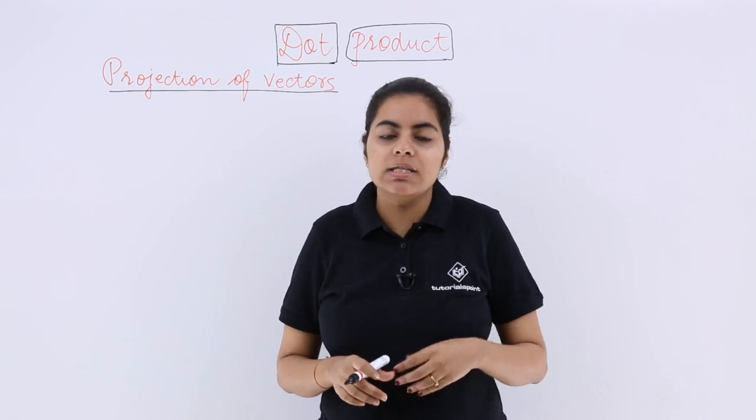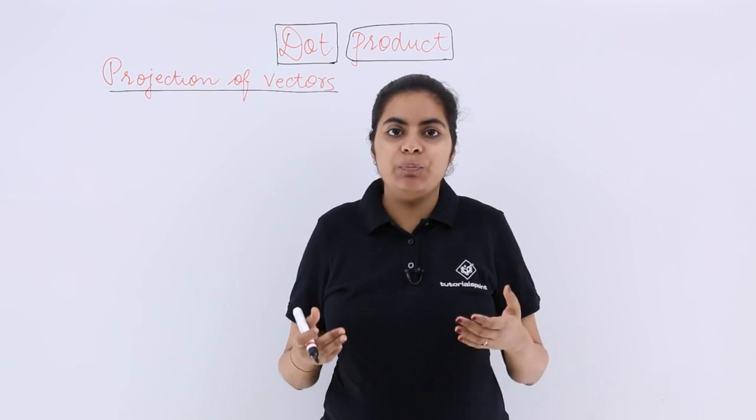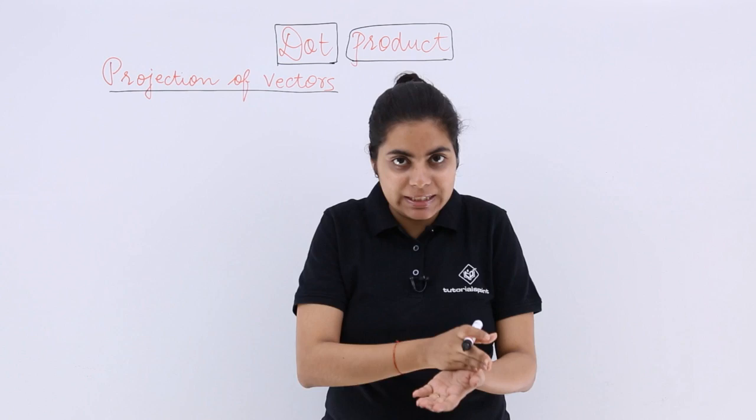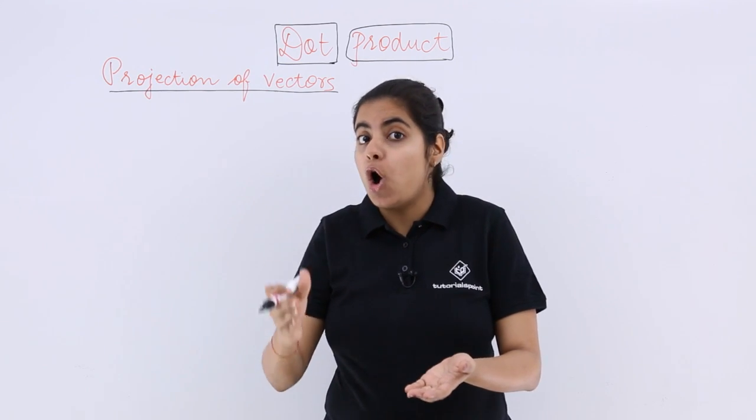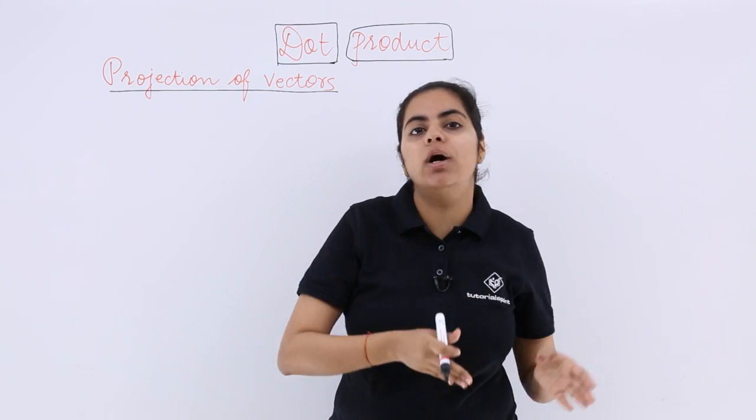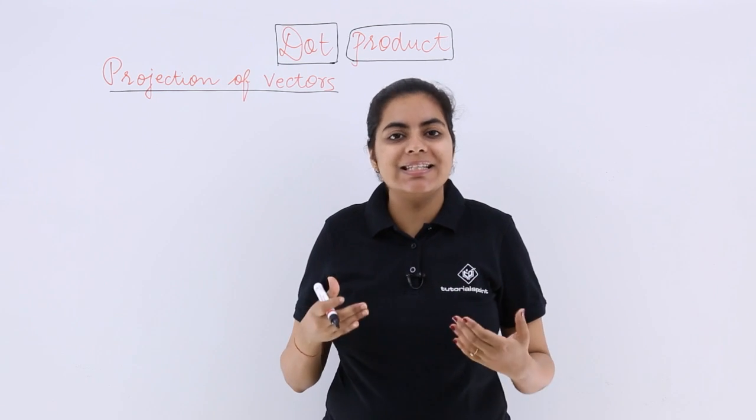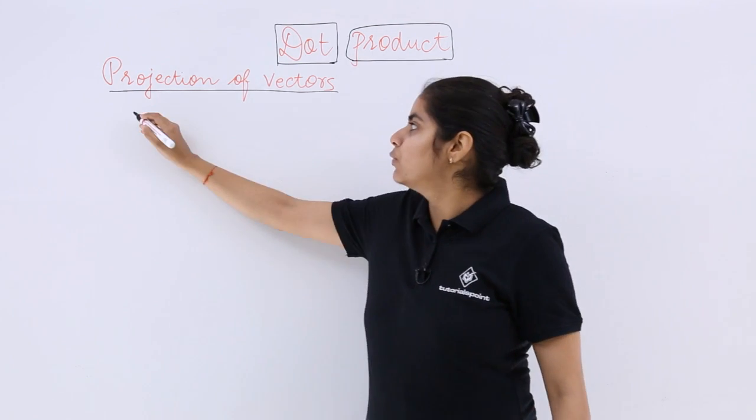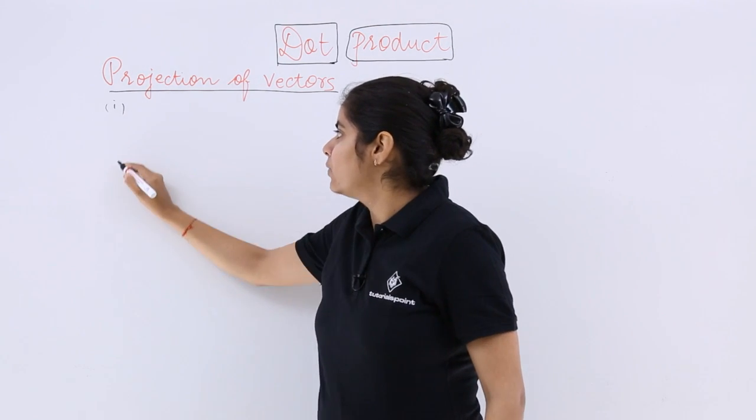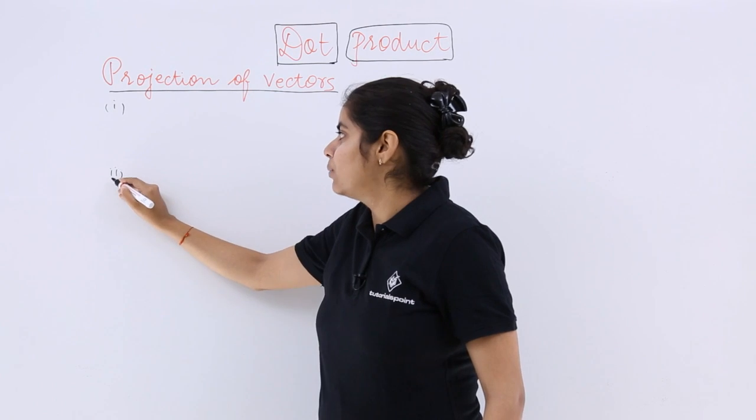So if you have two vectors A and B, the projection can be of vector A on B or the projection can be of vector B on A. So both cases have to be studied. Let's name the first one as case number 1 and the second one as case number 2.